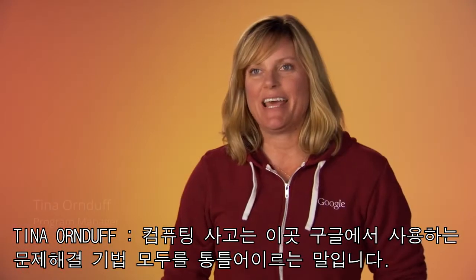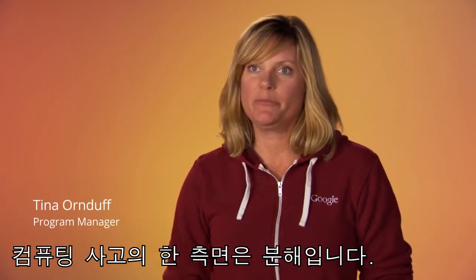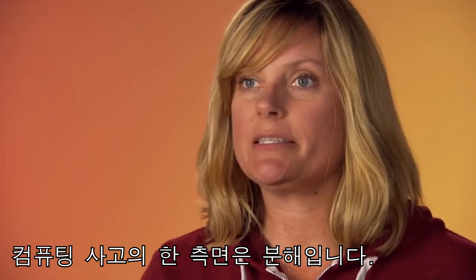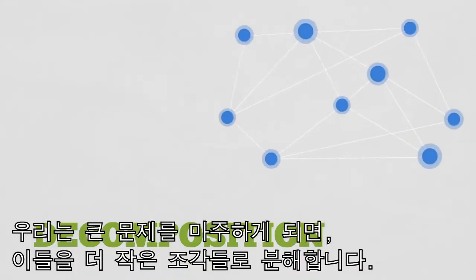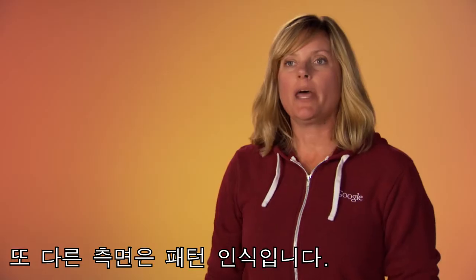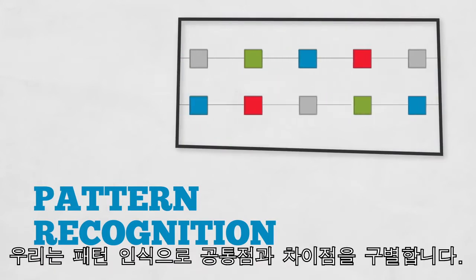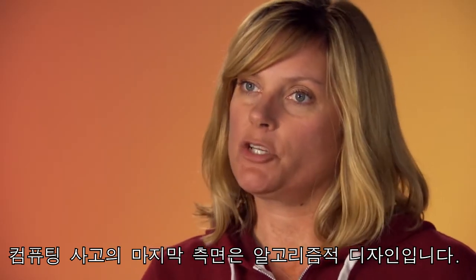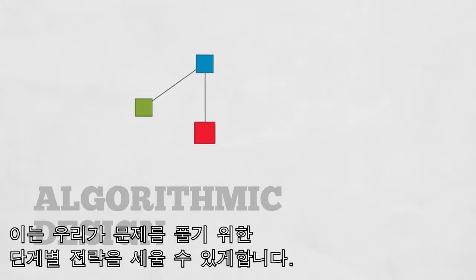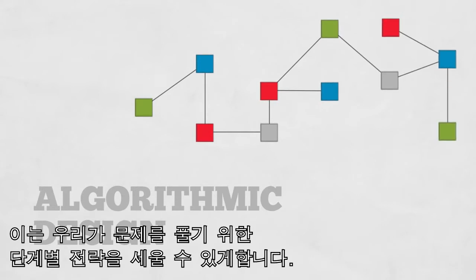Computational thinking is a set of problem-solving techniques that we use here at Google. One aspect of computational thinking is decomposition, where we take a large problem and break it down into smaller pieces. Another aspect is pattern recognition — we use it to identify similarities and differences. The final part is algorithmic design, which allows us to create a step-by-step strategy for solving a problem.